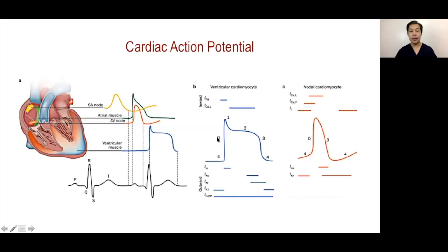Phase one is early after-depolarization. Phase two is the plateau phase. Phase three is repolarization. And phase four is the resting membrane potential. In a resting myocyte, the resting membrane potential is around negative 70 millivolts.